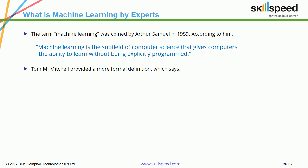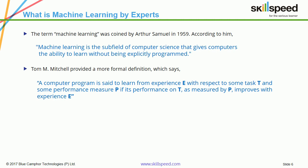Tom Mitchell provides a more formal definition which says: a computer program is said to learn from experience E with respect to some task T and some performance measure P, if its performance on T as measured by P improves with experience E. The core idea behind Tom's definition is that any computer program should have some observations or data to learn and, over a period of time, the experience should grow.